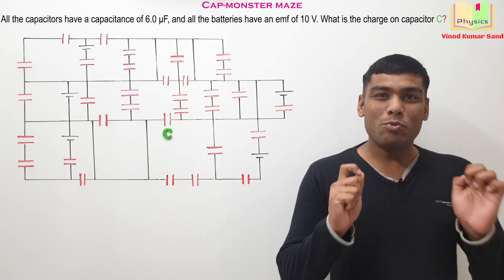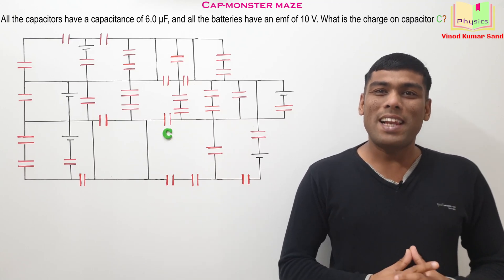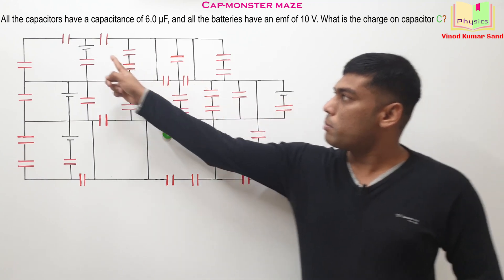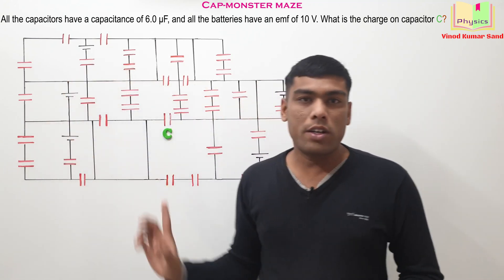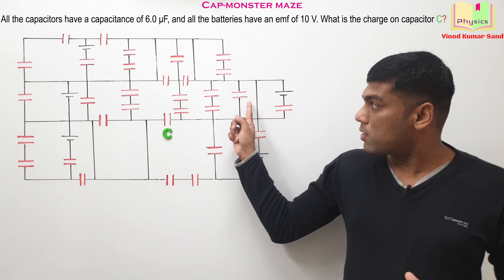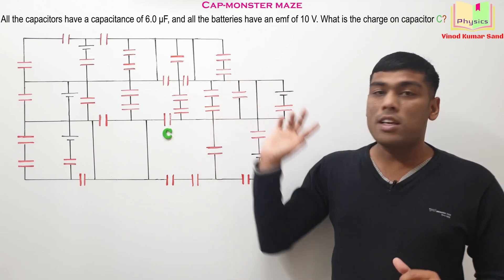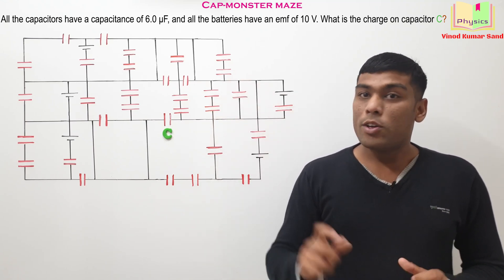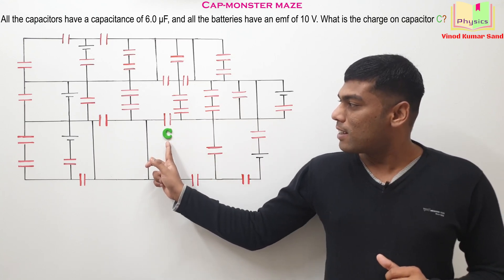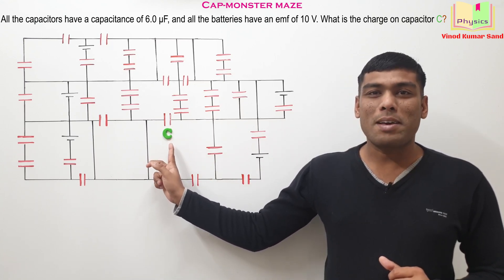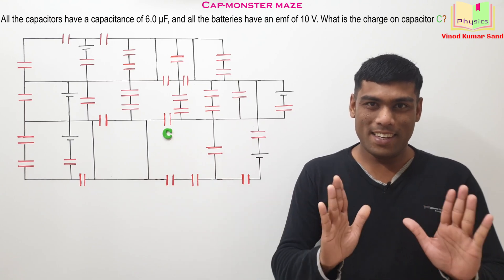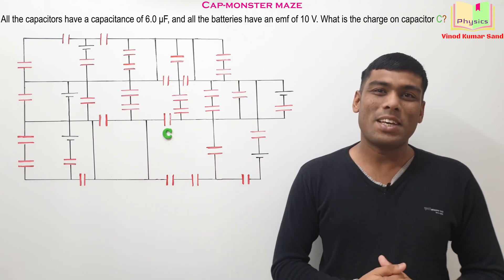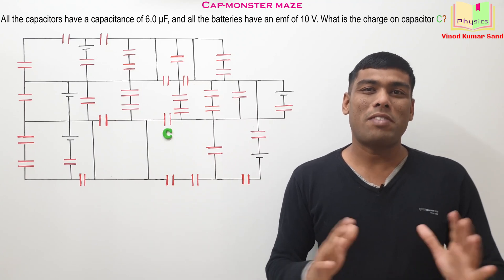Hello everyone. Here we have a simple and nice question. Each battery has the EMF equal to 10 volts and each capacitor has the capacitance equal to 6 microfarads. We need to determine the charge on this capacitor C. You may pause here and give it a try, and then I'll be simplifying it.